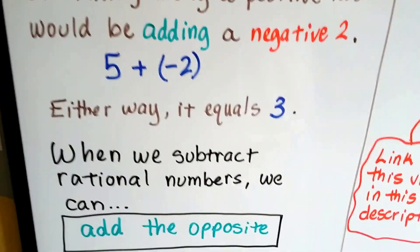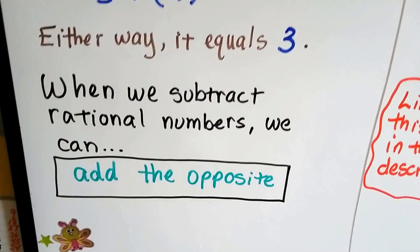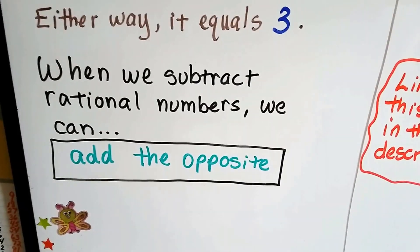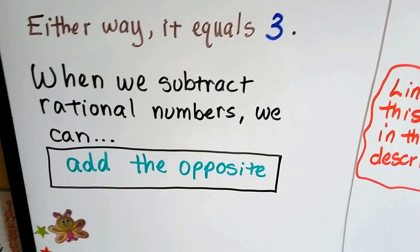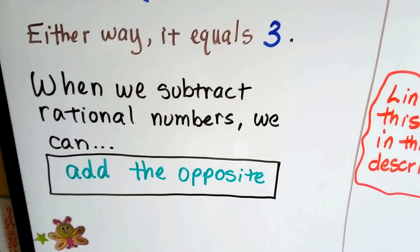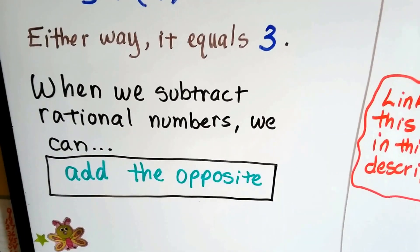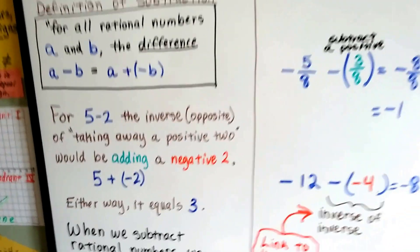When we subtract rational numbers, we add the opposite. It's really important that you remember: subtracting is adding the opposite.